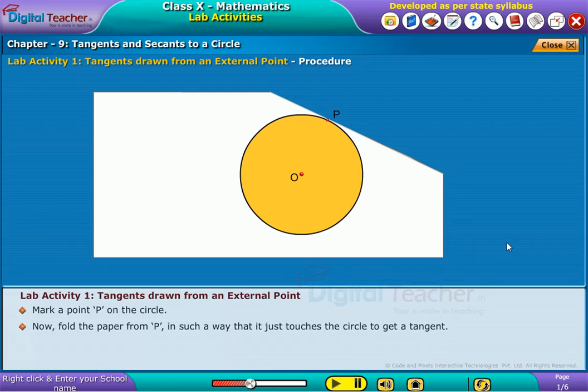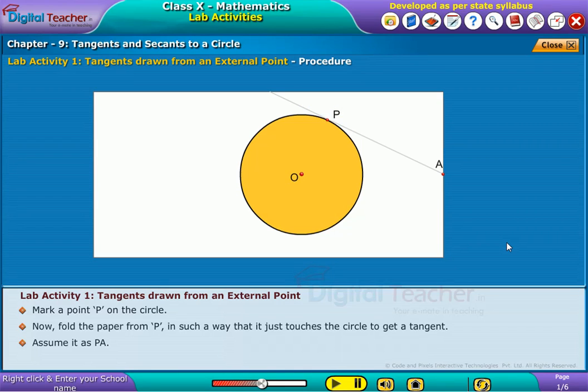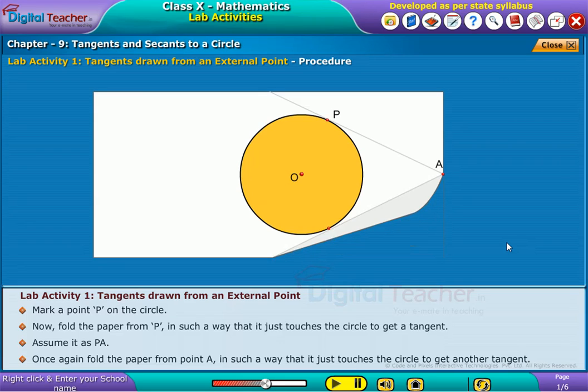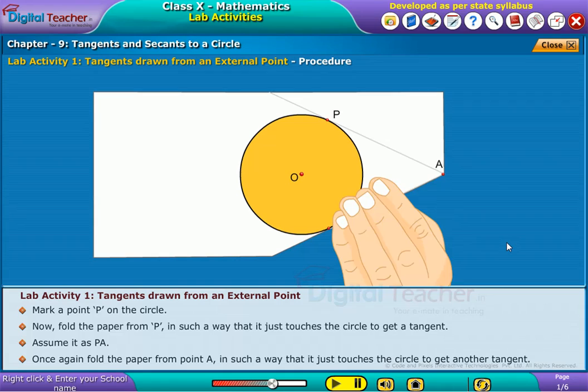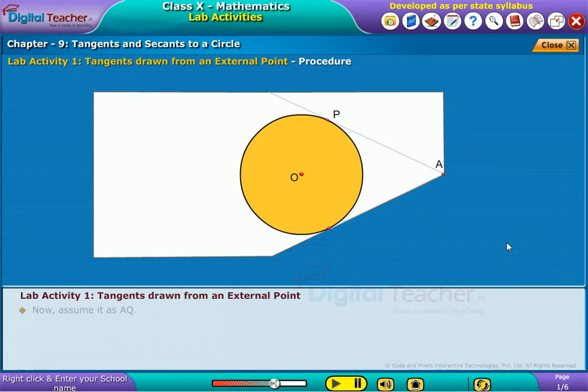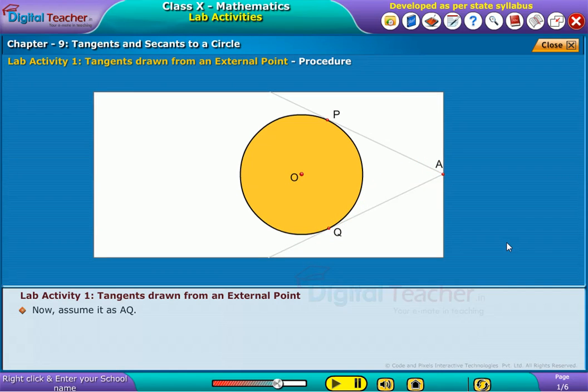Now, fold the paper from P in such a way that it just touches the circle to get a tangent. Assume it as PA. Once again, fold the paper from point A in such a way that it just touches the circle to get another tangent. Assume it as AQ.